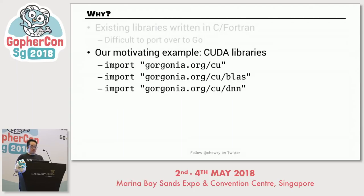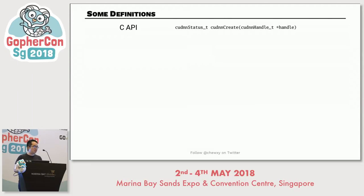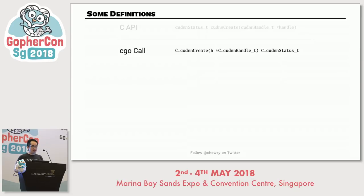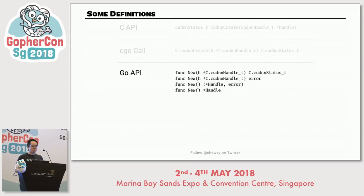I'll be using Gorgonia's CUDA libraries, which I wrote for deep learning. You don't have to understand deep learning to understand this talk. But first, some definitions. When I mention a C API, I literally mean a function written in C code somewhere. To access the C API, you make a CGO call, which looks something like that. And when I say Go API or binding, I mean one of these things — also called wrapper functions — listed here from least user-friendly to most user-friendly.